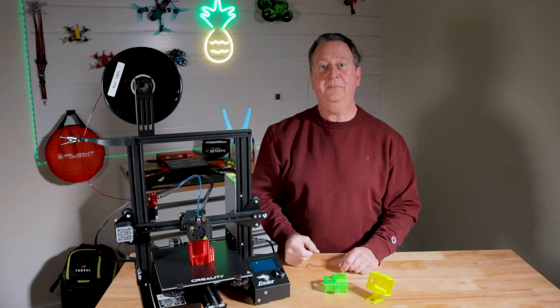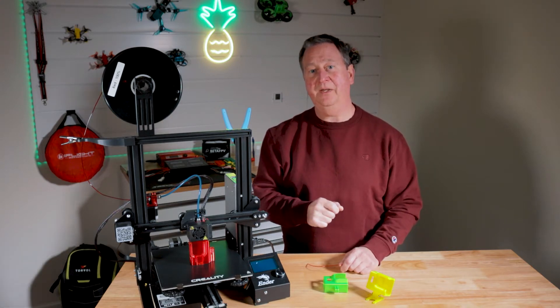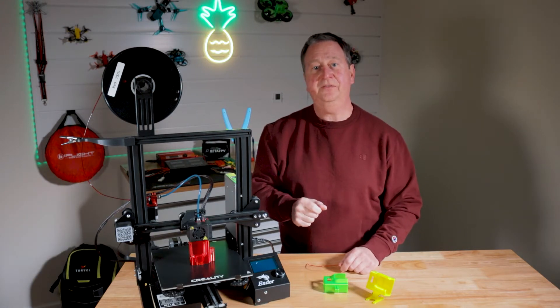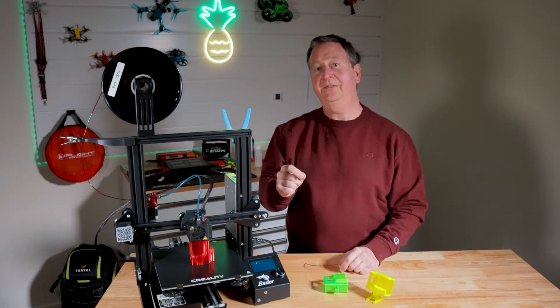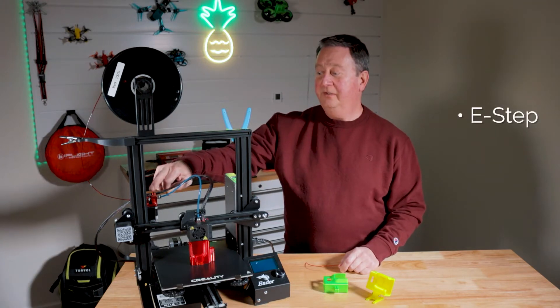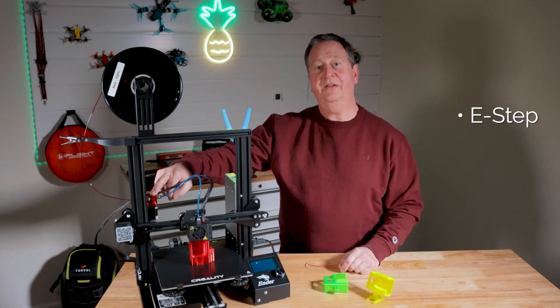I'm going to take you through the steps on how to modify that to print TPU even better, along with replacing the Bowden tube and some other fittings. Other videos in this series are going to cover how to set up the E-step, which will tell the pulses of the servo motor the correct amount of filament to feed.